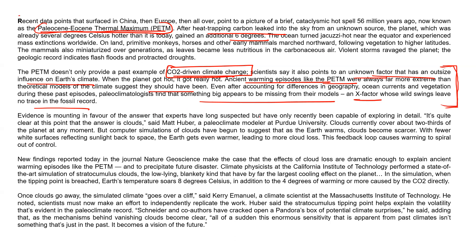Evidence is mounting in favor of an answer experts have long suspected but only recently been capable of exploring: the answer is clouds, said Matt Huber. Clouds currently cover over two-thirds of the planet at any moment, but computer simulations suggest that as the Earth warms, clouds become scarcer. With fewer white surfaces reflecting sunlight back to space, the Earth gets even warmer, leading to more cloud loss. This feedback loop causes warming to spiral out of control — warming causes cloud loss, cloud loss causes more warming, and so on in a vicious cycle.